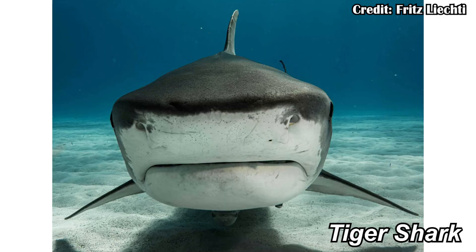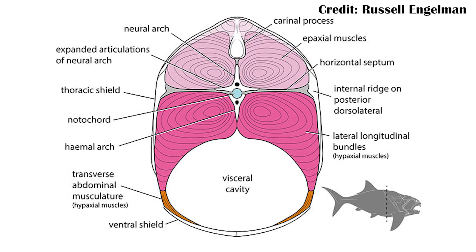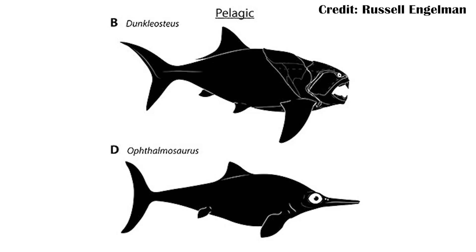Looking at these bones, Dunkleosteus would have been particularly deep-bodied, not wide-bodied. When you think of something like a tiger shark, you think of an animal that's more flat than it is tall — that's not the case with Dunkleosteus. It would have been deeper-bodied and relatively narrow-bodied. There's not anything really built like that today, but in the fossil record some ichthyosaurs were taller-bodied than they were wide-bodied, and there will be more on those comparisons shortly.